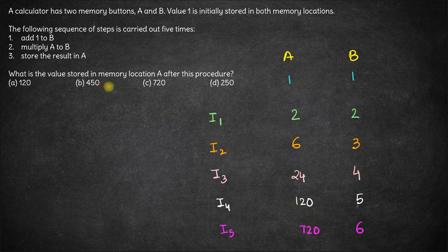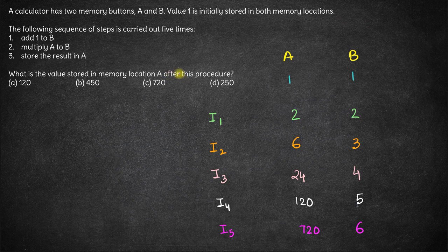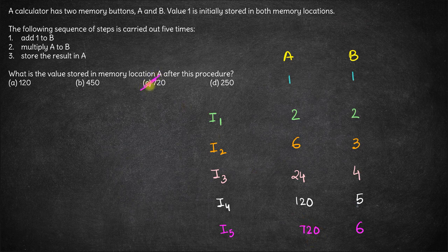What is the value stored in memory location A after this procedure? After all five iterations, the value stored in A is 720, which is option C. Thank you.